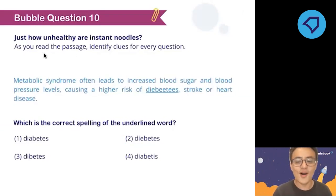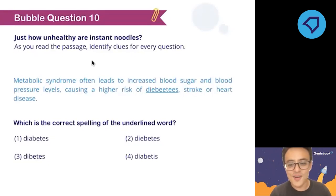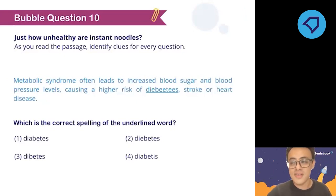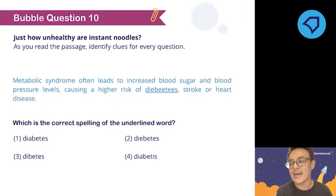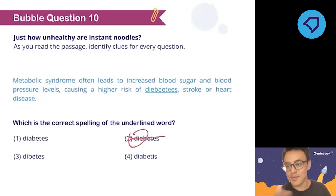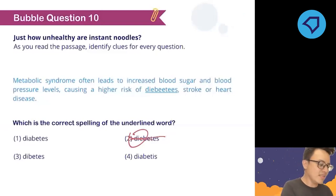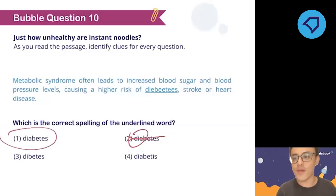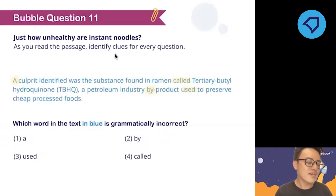Number ten: 80% of you got this right. The correct way to spell 'diabetes' is not with a 'die' in the middle — yes, diabetes may cause you to die, but that's not how you spell it. The correct pronunciation and spelling is D-I-A-B-E-T-E-S: diabetes.